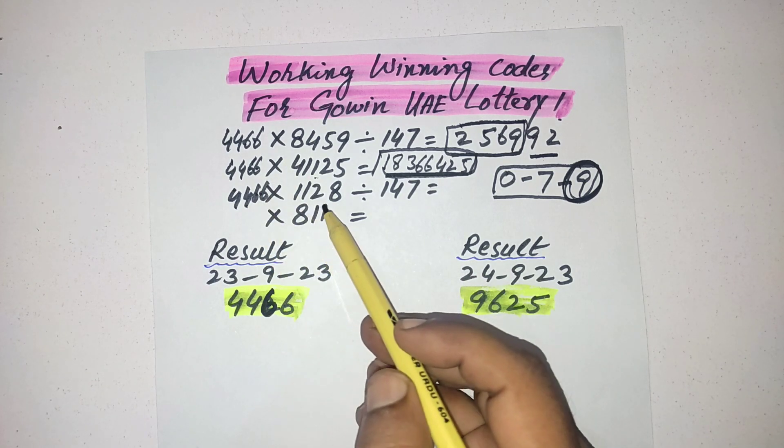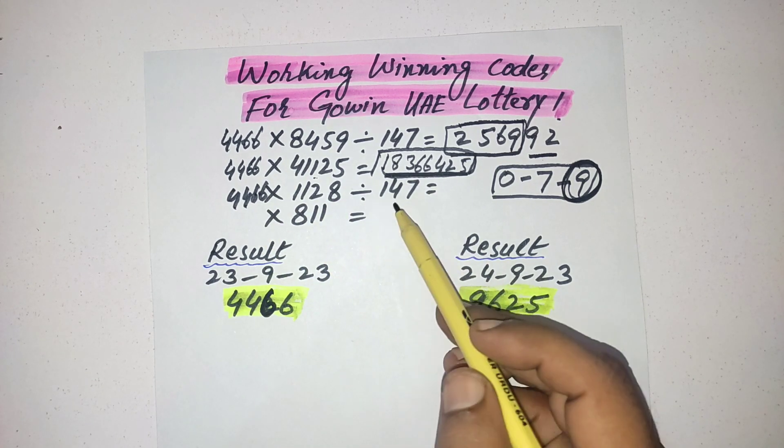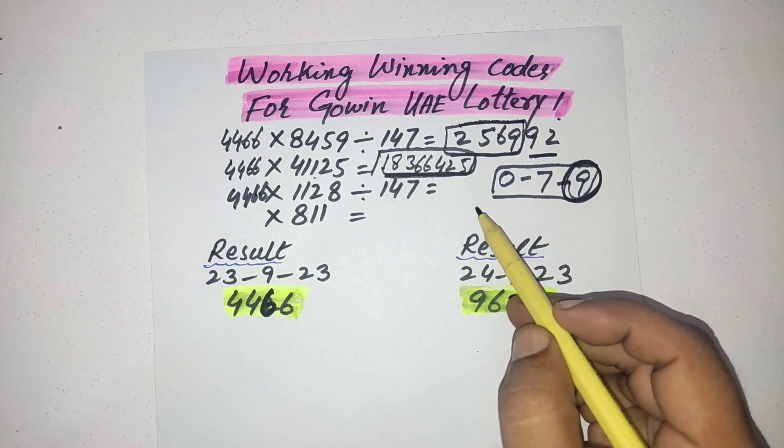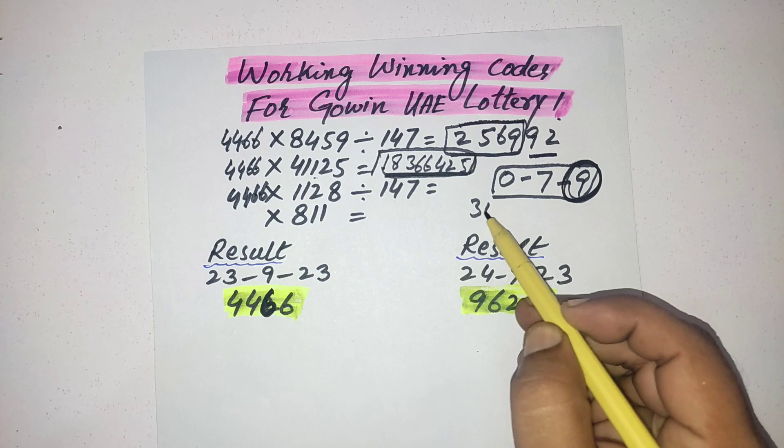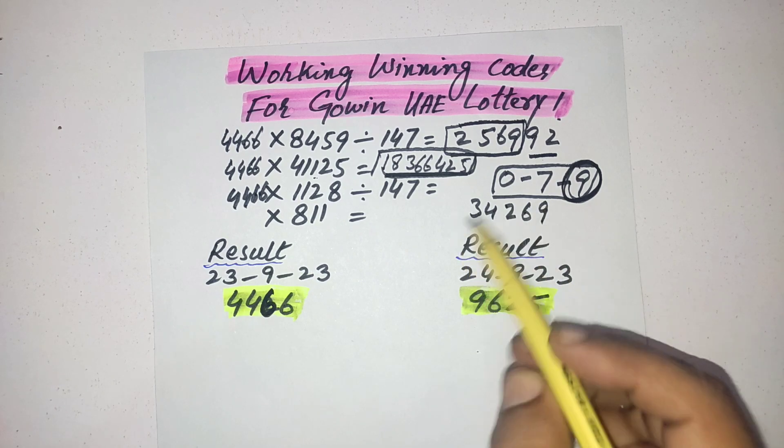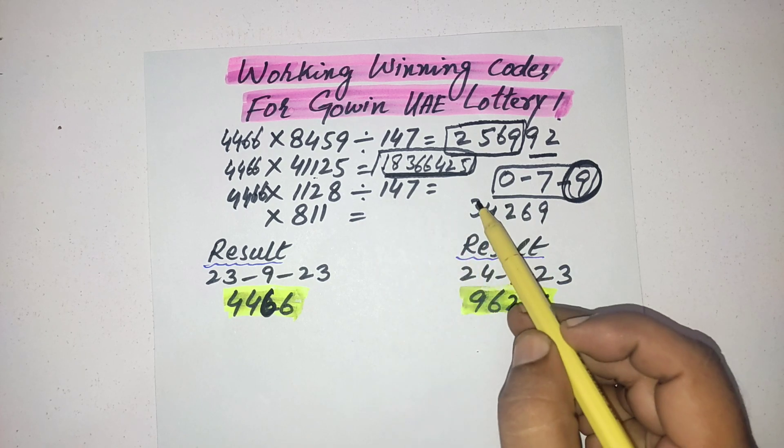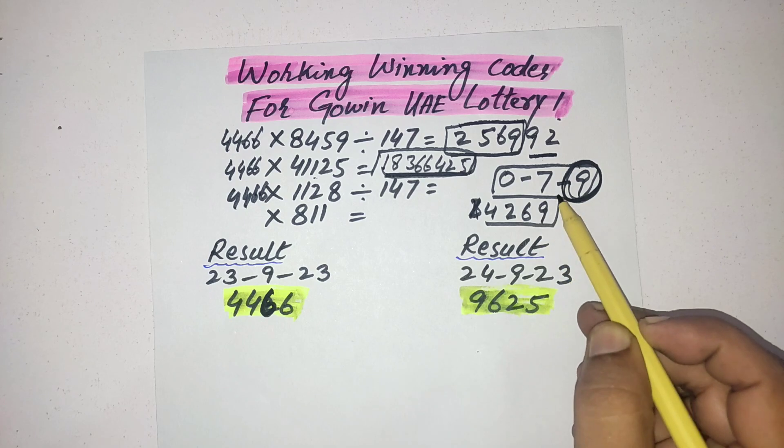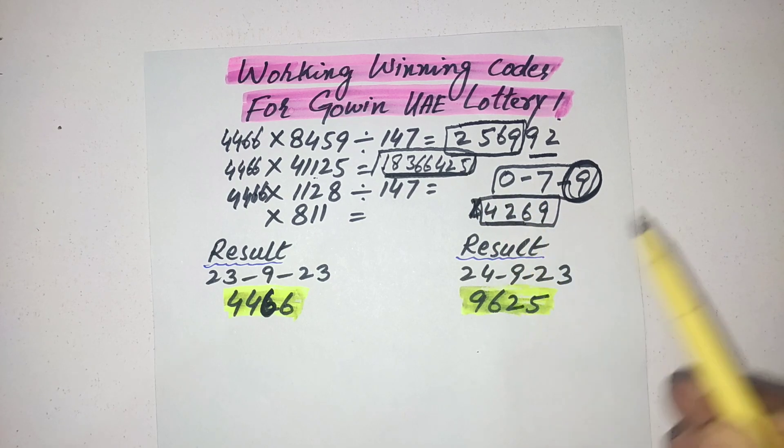Third one is multiply with 1128 and divide it with 147. The answer will be 34269.